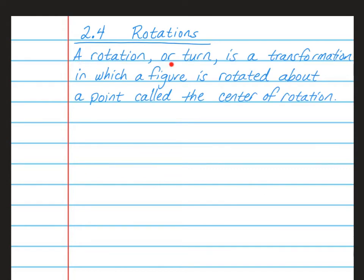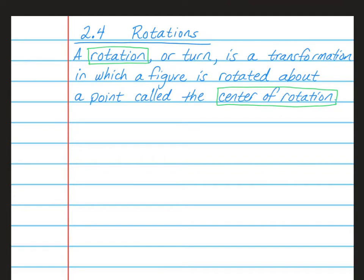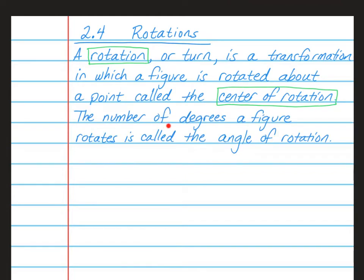A rotation or turn is a transformation in which a figure is rotated about a point, and this point is called the center of rotation. For this lesson, we have a couple of vocab words. First, rotation is one of our vocabulary words, and secondly, center of rotation is another vocabulary phrase. The number of degrees a figure rotates is called the angle of rotation, and this is another vocabulary phrase that you need to know.